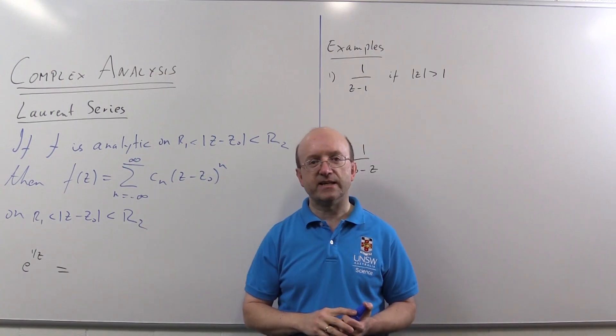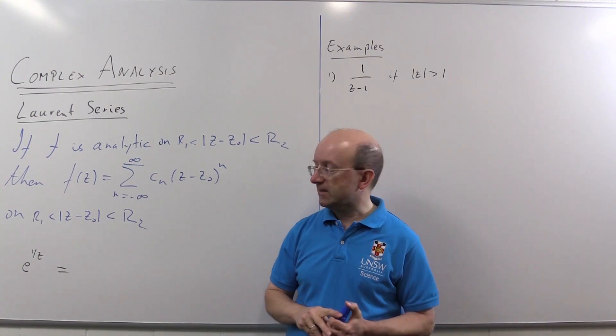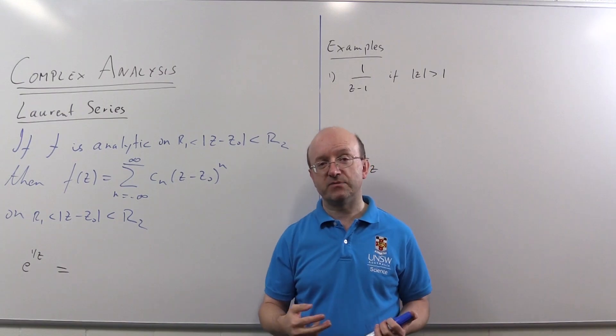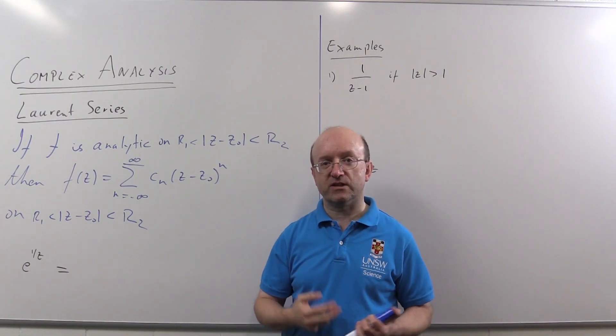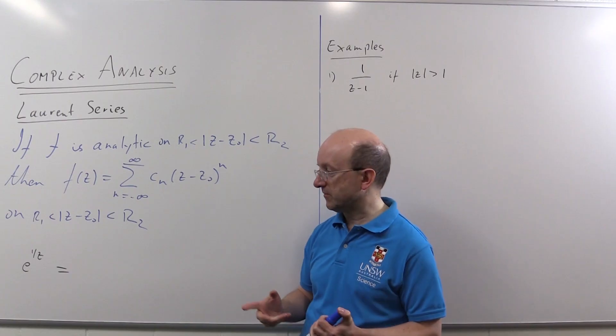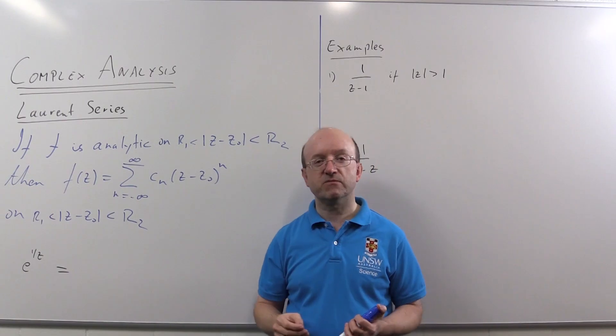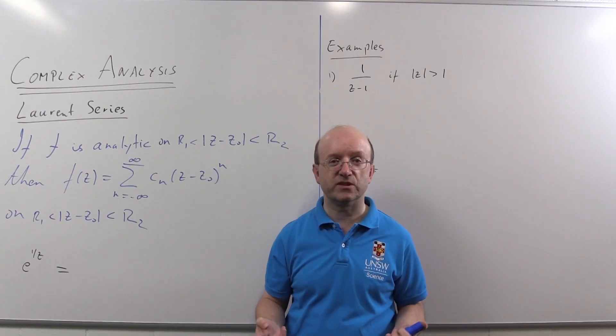Now e to the 1/z, that's a function that's analytic everywhere except z equals zero, so that would be analytic on |z| strictly bigger than zero. And in order to write the series down we just take the series, the known series for exponential, and change the z into one upon z.